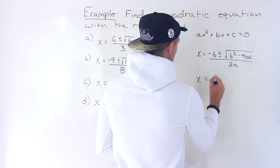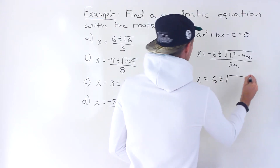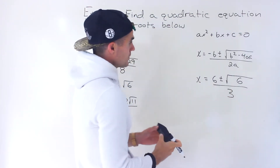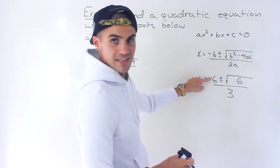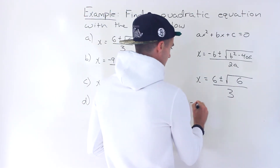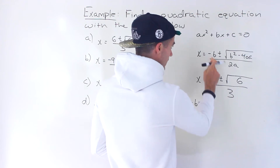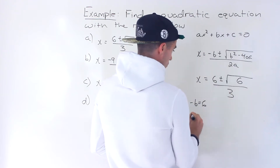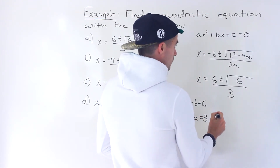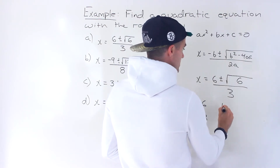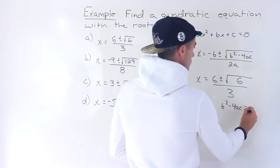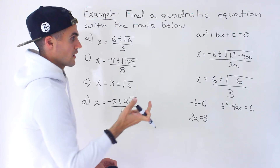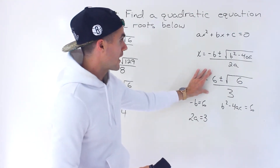So we can write x equals (6 ± √6) / 3. Notice that the negative b value has to equal 6, so we write down all the equalities: negative b equals 6, 2a equals 3 (the denominator), and b² − 4ac equals 6 — whatever's under the square root in the formula matches whatever's under the square root in our given solution. We're just matching up this format to that format.